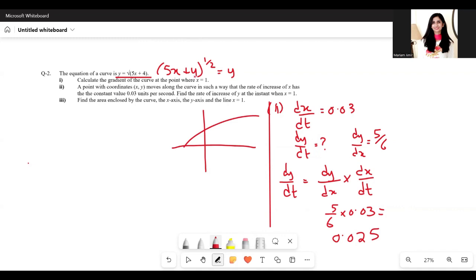We need the area enclosed between the x-axis, y-axis, and the line x equals 1. This area starts from 0 and goes till 1. So we integrate the curve square root of (5x + 4) within the limits 0 to 1.